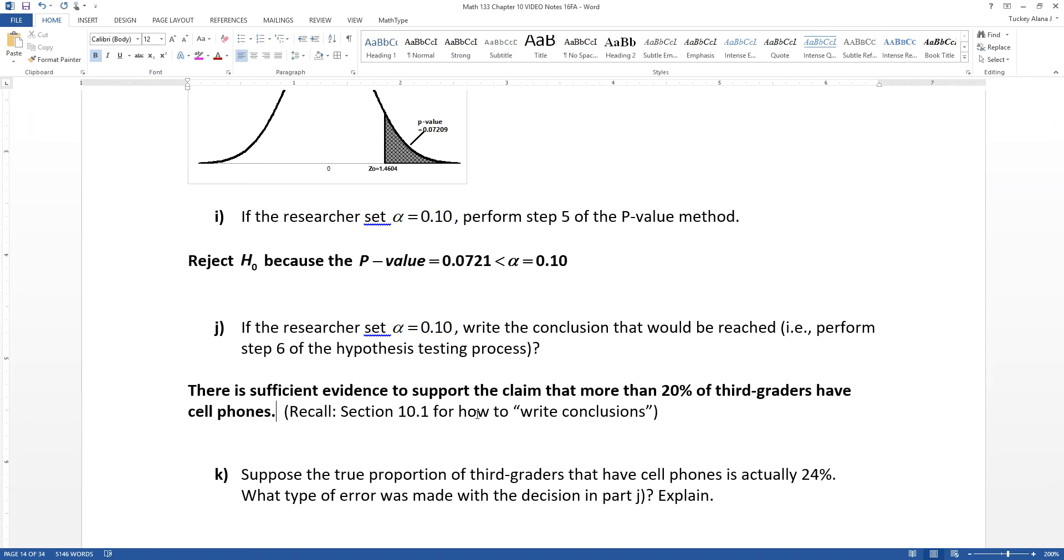They have to be very specific. It has to be, there is sufficient evidence or there's not sufficient evidence. And you must write out that claim of the alternative hypothesis in words. Alright, we'll stop right there and we'll pick up here for the next video.